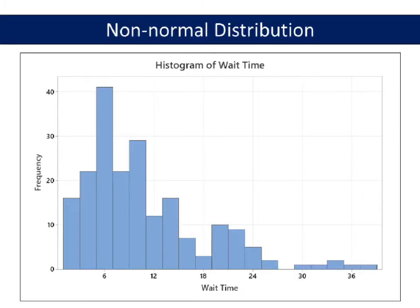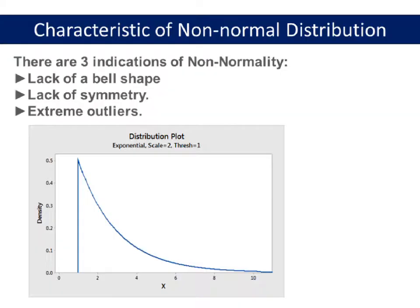Some measurements naturally follow a non-normal distribution. Consider wait times at a bank or customer waiting times at a call center, where it's not possible to wait a negative amount of time. Besides, in transactional or service processes, we often deal with lead time data, and usually that data does not follow the normal distribution. There are three indications of non-normality: lack of a bell shape, lack of symmetry, and extreme outliers.